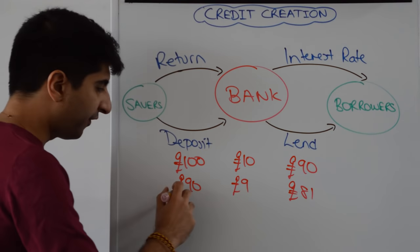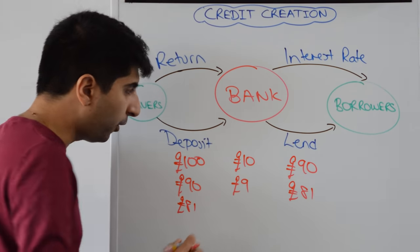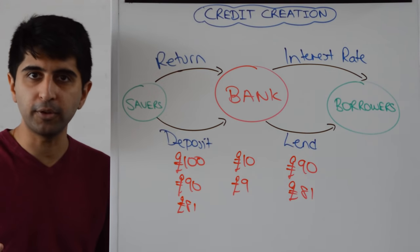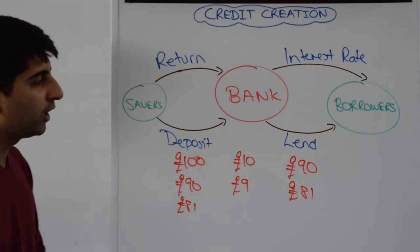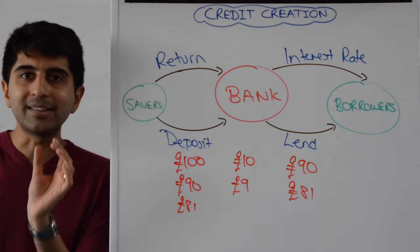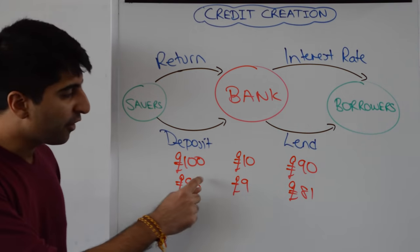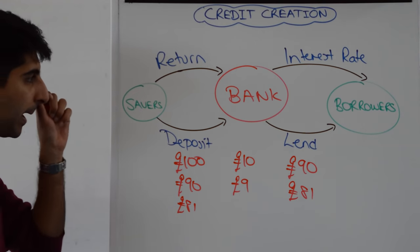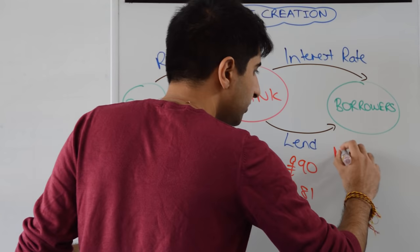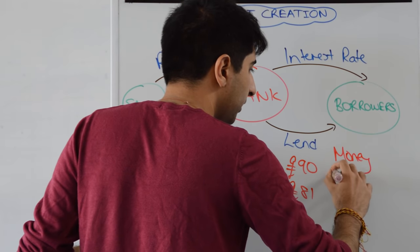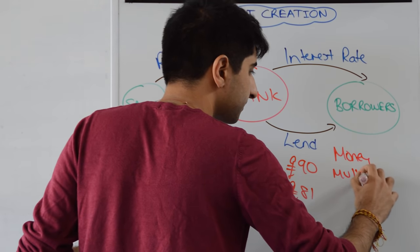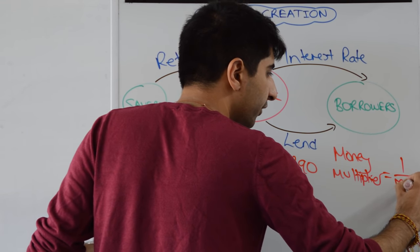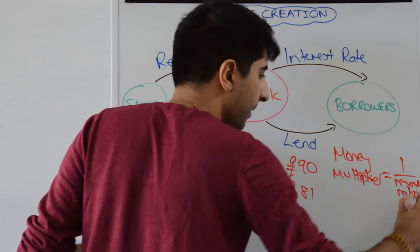So you get the idea of how deposits can be turned into loans and they will come back into the bank as a form of deposits. This process continues. What we can actually work out is how much extra money can be created from an initial deposit using an equation called the money multiplier. And the money multiplier equation is this: The money multiplier is 1 over the reserve ratio or the reserve requirement.